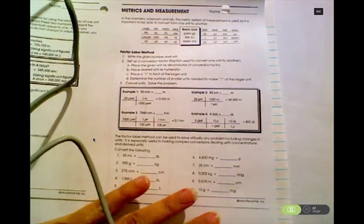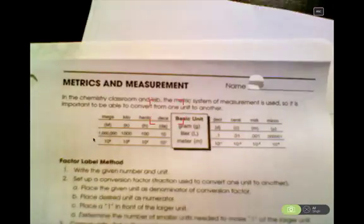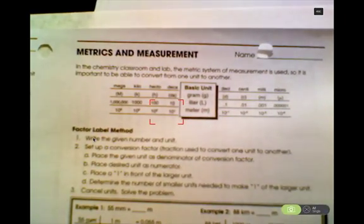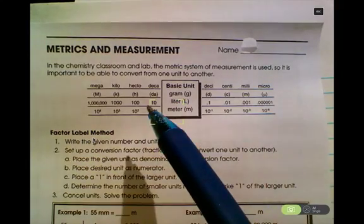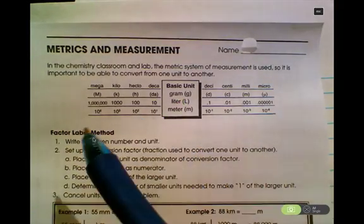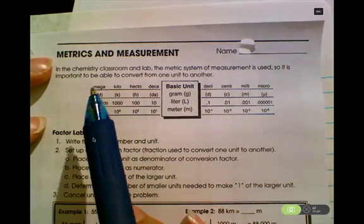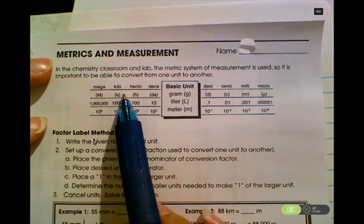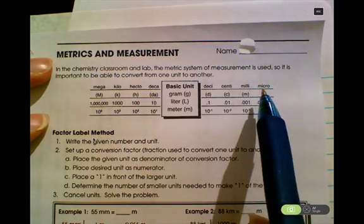Main thing to remember here is the chart up here at the top has the conversions, the different metric prefixes: mega, kilo, hectadeca, base unit, deci, centi, milli, and micro.